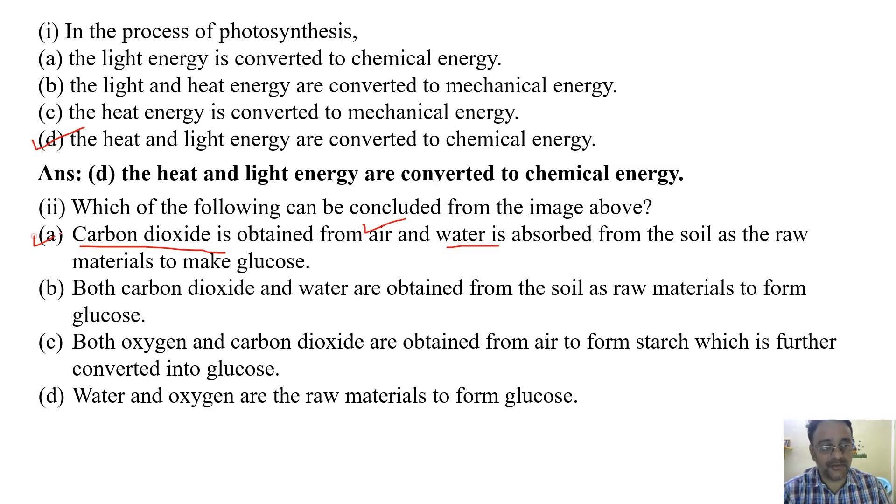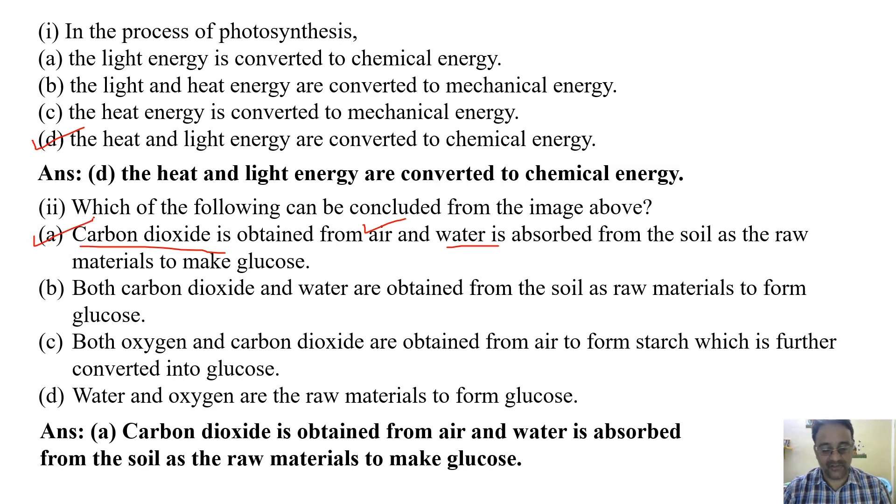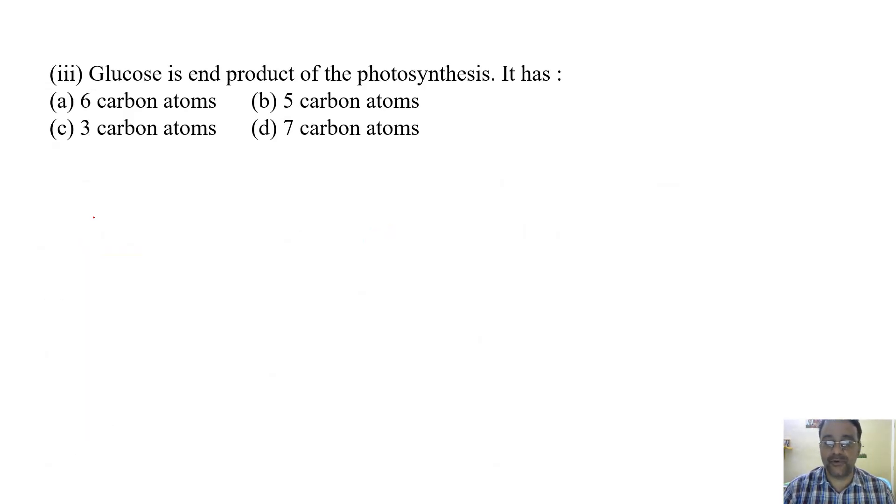Next question: Glucose is end product of photosynthesis. It has - (a) 6 carbon atoms, (b) 5 carbon atoms, (c) 3 carbon atoms, (d) 7 carbon atoms. If we look at the equation, we find 6 carbon atoms, so the answer is (a) 6 carbon atoms.